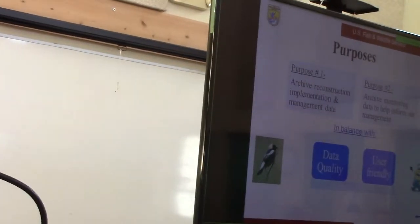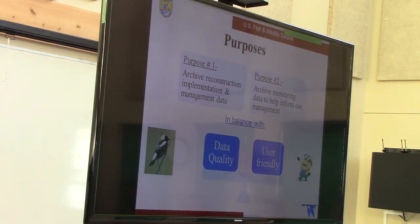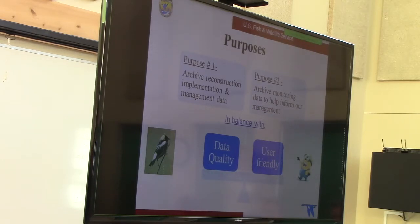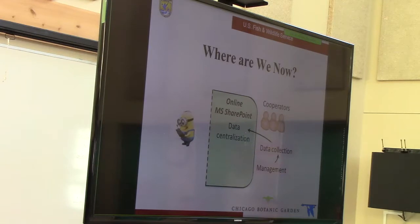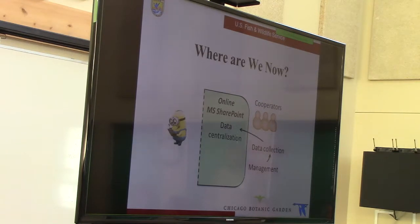Here are our two purposes for building a centralized database. Purpose number one is to archive reconstruction implementation and management data. Purpose number two is to archive monitoring data to help inform our management. As this team has worked on this, we know it's really important to balance data quality and user-friendliness. With data quality, we need to make sure what we put in the database can be rolled up someday in a scientifically sound way. With user-friendliness, if this is too clumsy or hard to use, none of us are going to want to use it. We're fortunate to have great partners with the Chicago Botanic Garden who have lots of experience with developing standardized, user-friendly databases.